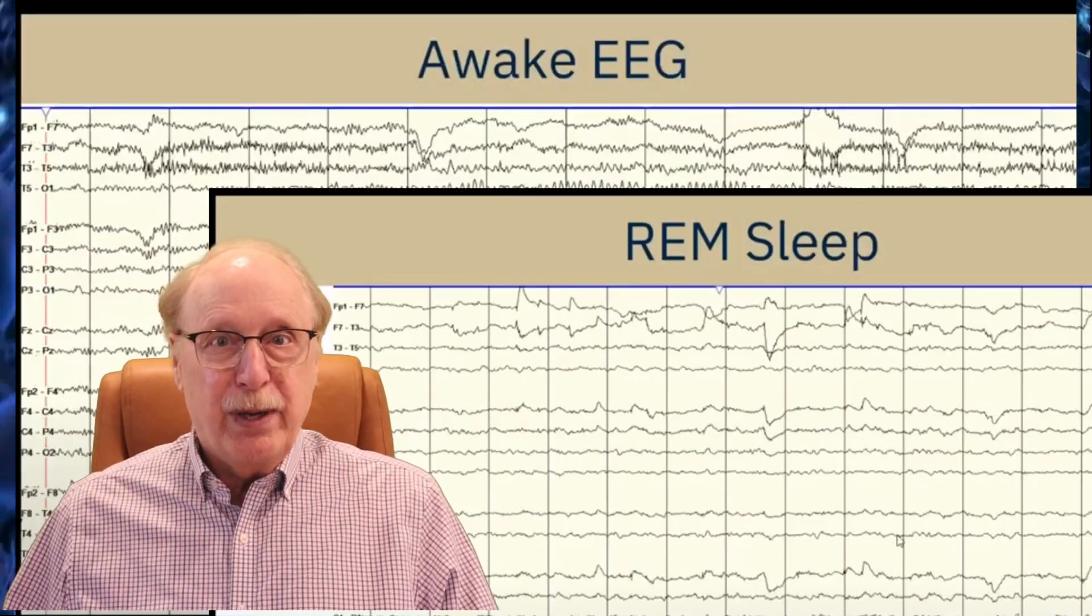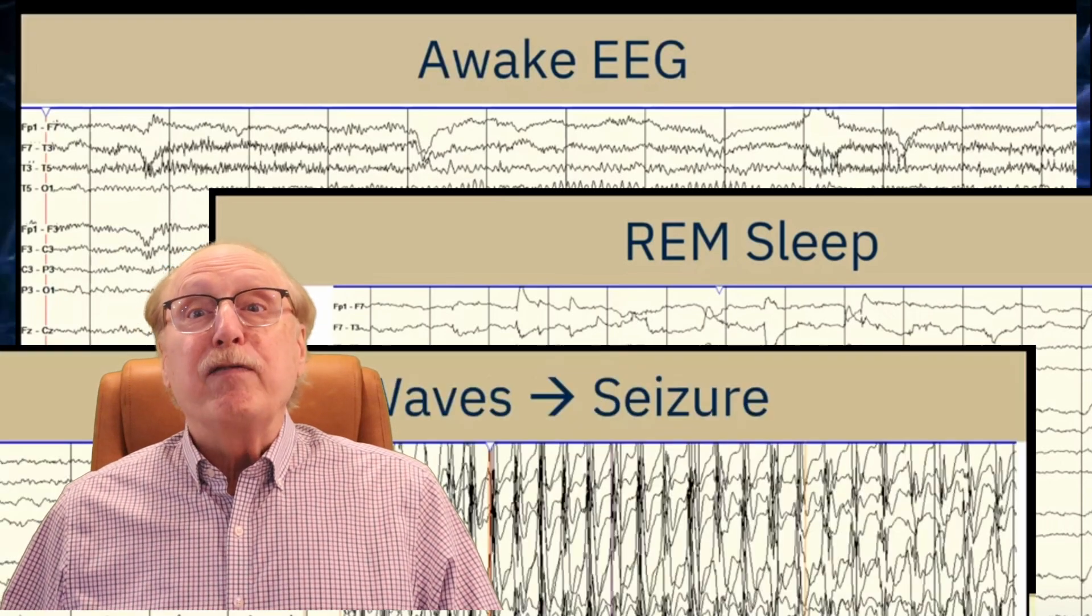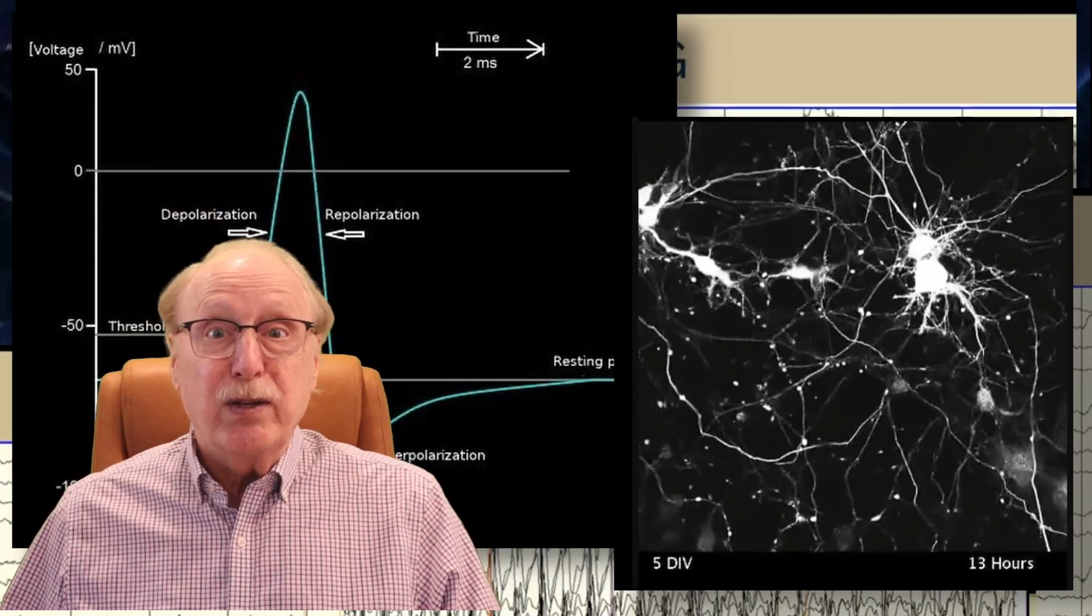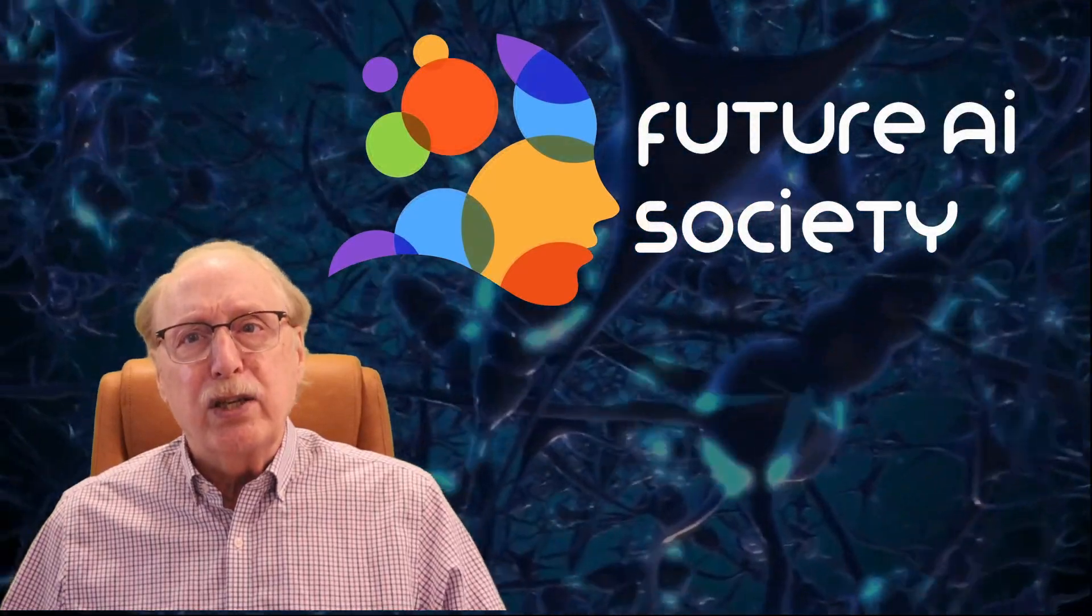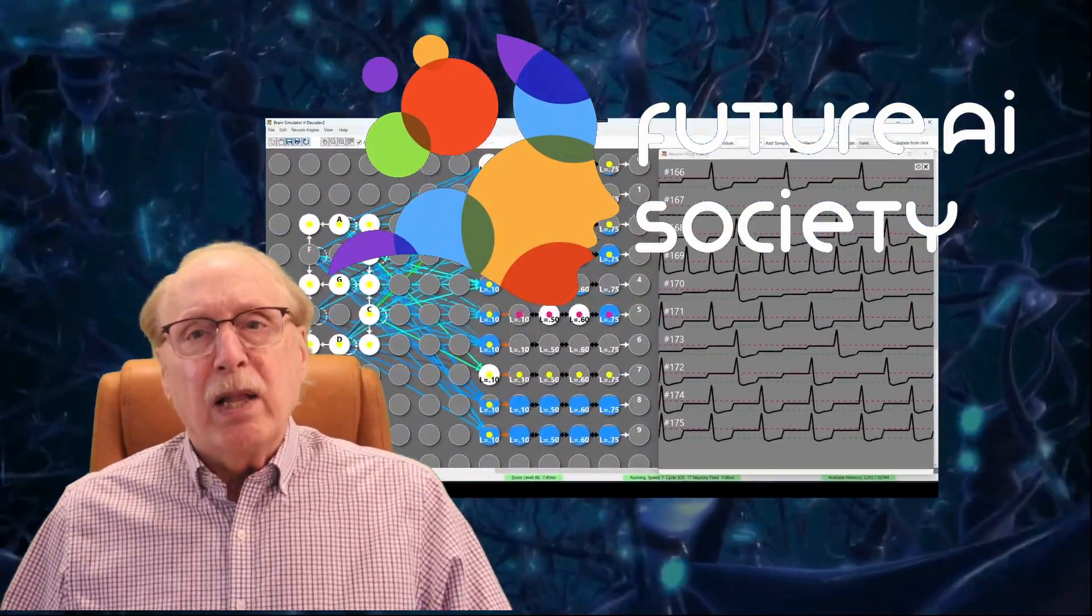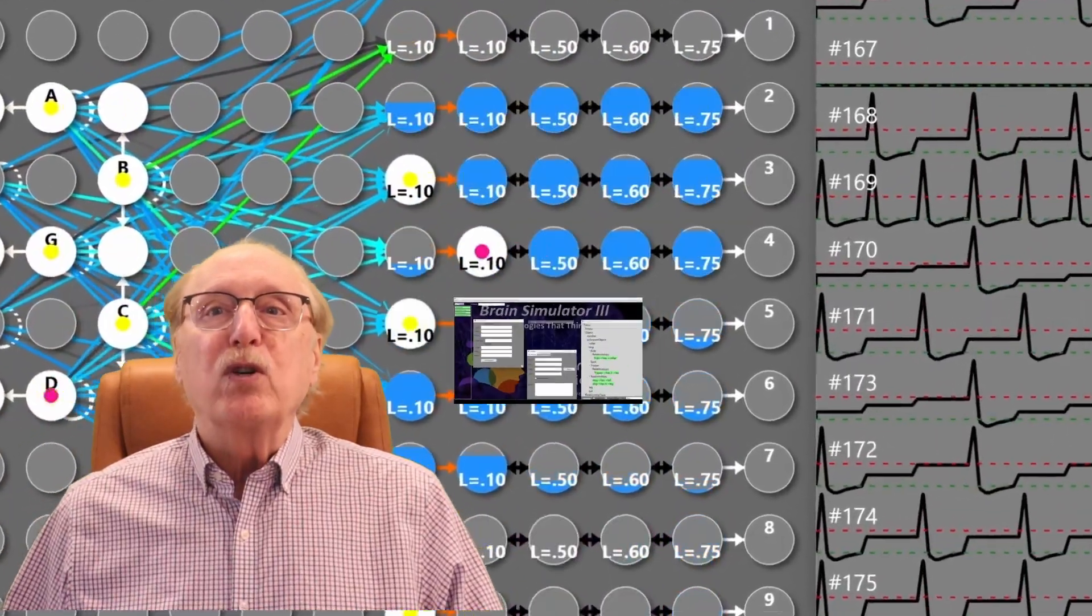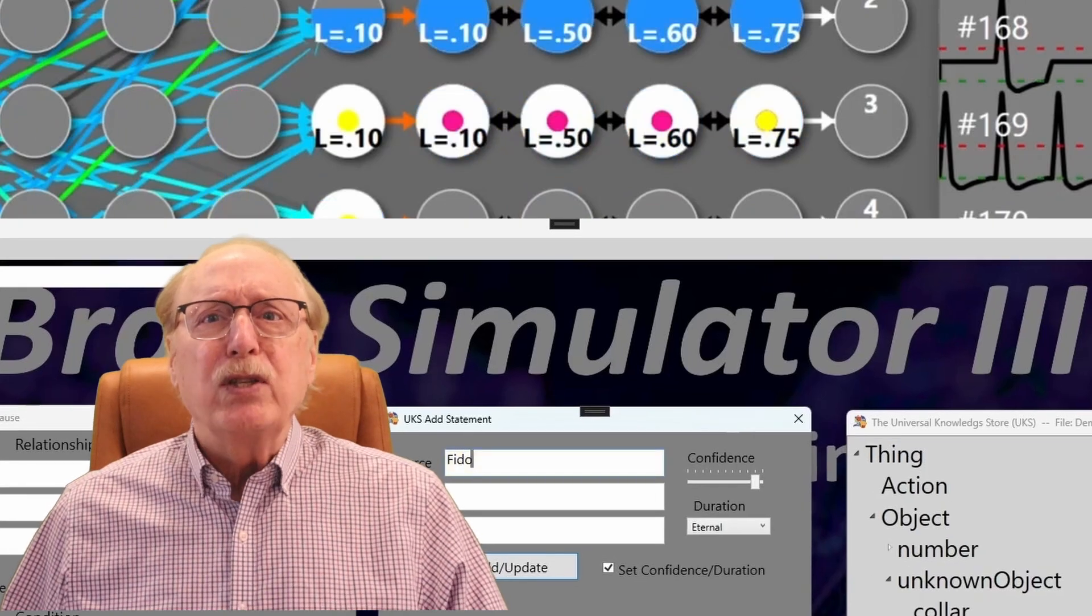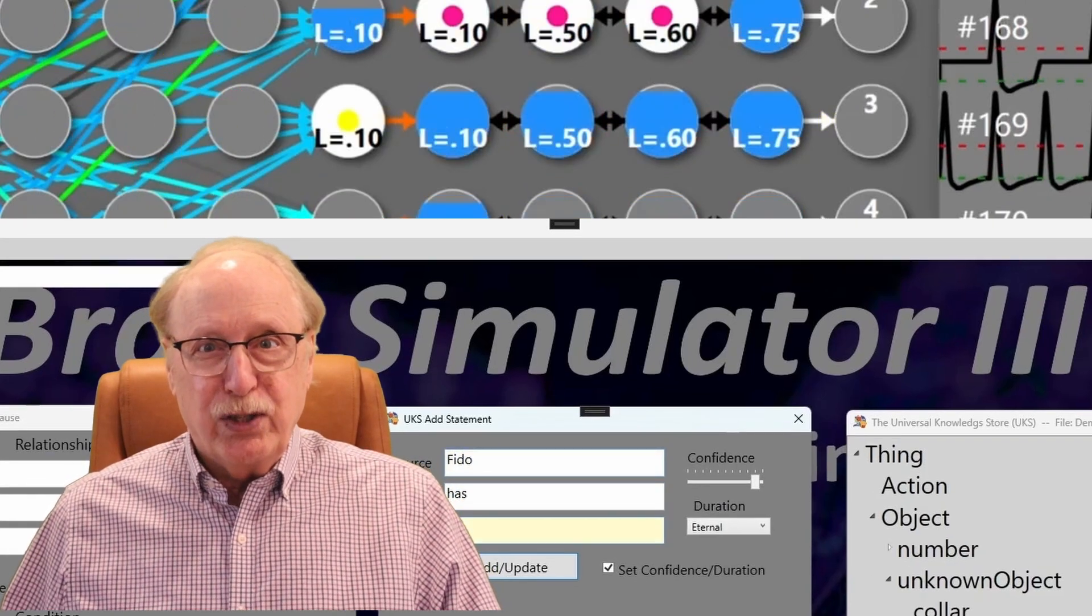I'm Charles Simon, long-time AI researcher, software developer, and manager. Beyond AI, I've developed software for neurological test instruments and neuro-simulators. I created the Future AI Society to explore how neuroscience can inform smarter, more human-like AI. A lot of effort has gone into our open-source brain simulator projects, and I'll be using them throughout this series for simulations and demonstrations.